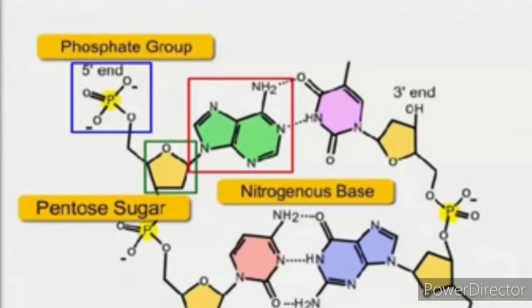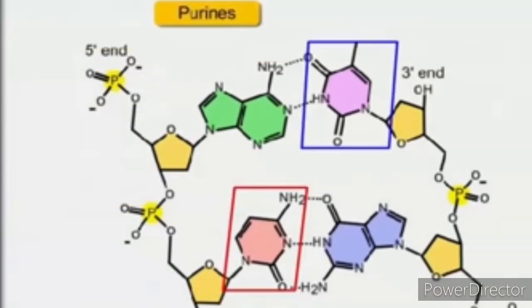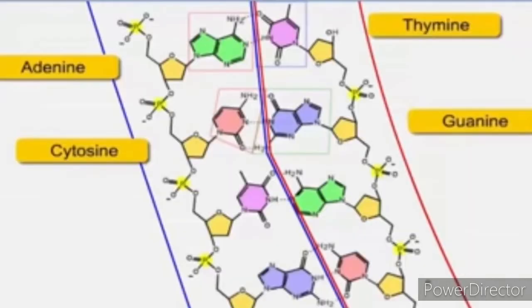The chemical structure of nucleic acids contains three components. The first component is nitrogenous bases. There are two types: purine bases, which contain adenine and guanine, and pyrimidine bases, which include cytosine, thymine, and uracil. Cytosine is common to both DNA and RNA, thymine is present only in DNA, and uracil is present in RNA in place of thymine.